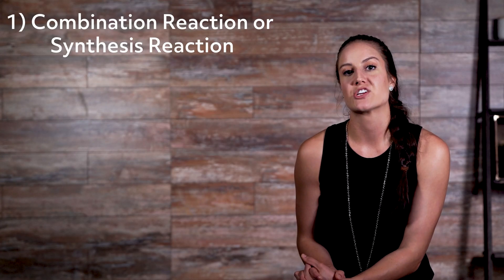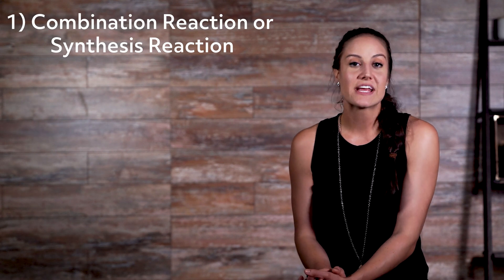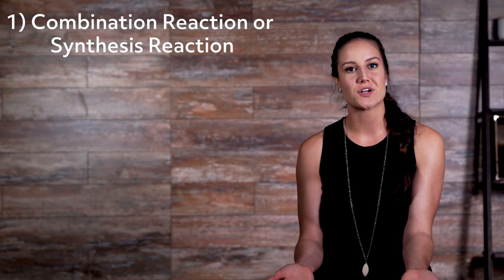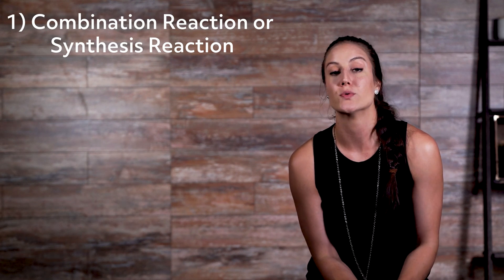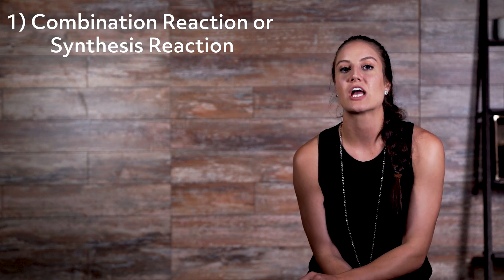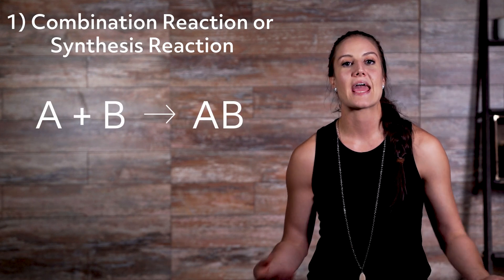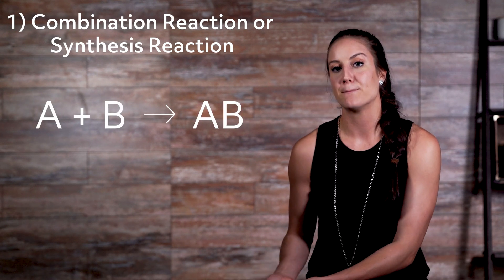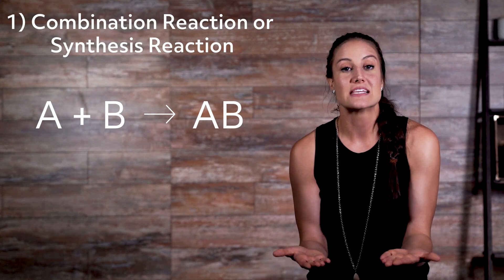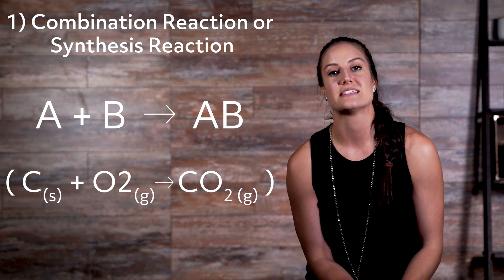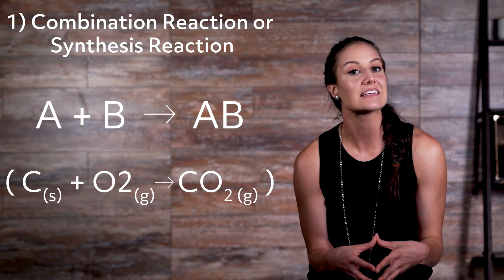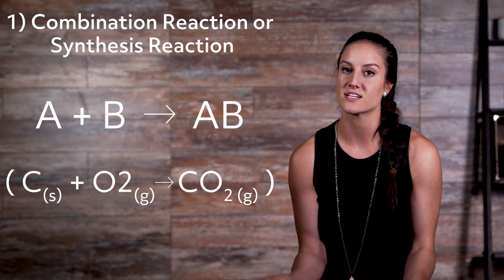Now let's take a look at five different types of chemical reactions. Number one: combination reaction, or synthesis reaction. A combination reaction is pretty straightforward — it can be defined as when substances are mixed together and they form a new compound. Here's what the combination reaction equation looks like: A + B yields AB. As you can see, these two substances literally combine to form a new substance. An example of this is carbon solid and oxygen gas reacting together to form carbon dioxide gas.